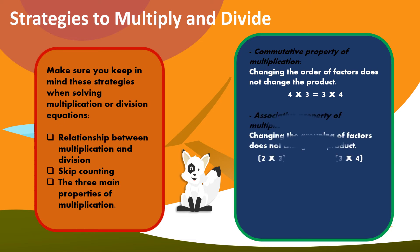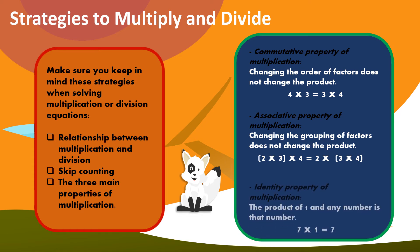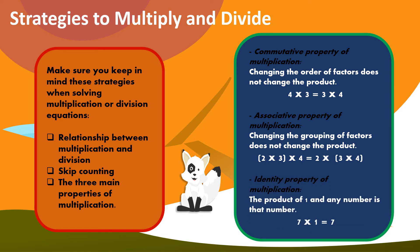Associative property of multiplication: changing the grouping of factors does not change the product. For example, (2 x 3) x 4 equals 2 x (3 x 4). Identity property of multiplication: the product of 1 and any number is that number. For example, 7 x 1 equals 7, and 9 x 1 equals 9.